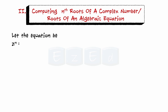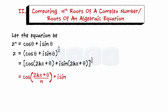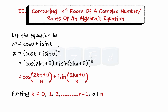Let the equation z to the power n equal to cosine theta plus i sine theta. Then z becomes equal to cosine theta plus i sine theta to the power 1 by n, which is further equal to cosine of 2k pi plus theta plus i sine of 2k pi plus theta, all to the power 1 by n. Applying De Moivre's theorem, this reduces to cosine of 2k pi plus theta by n plus i sine of 2k pi plus theta by n. Putting k equals 0, 1, 2, and so on up to n minus 1, all n roots of the equation are obtained.